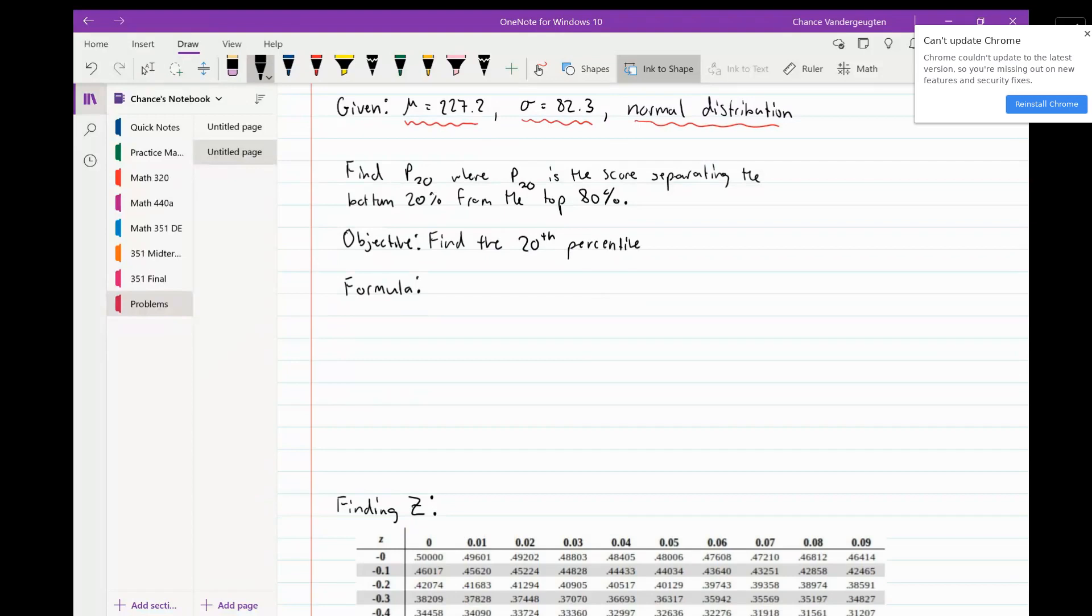When looking for a percentile in a normal distribution, there's a formula we can use: x equals mu plus z sigma. We already know what mu is and what sigma is. We're actually looking for this x right here.